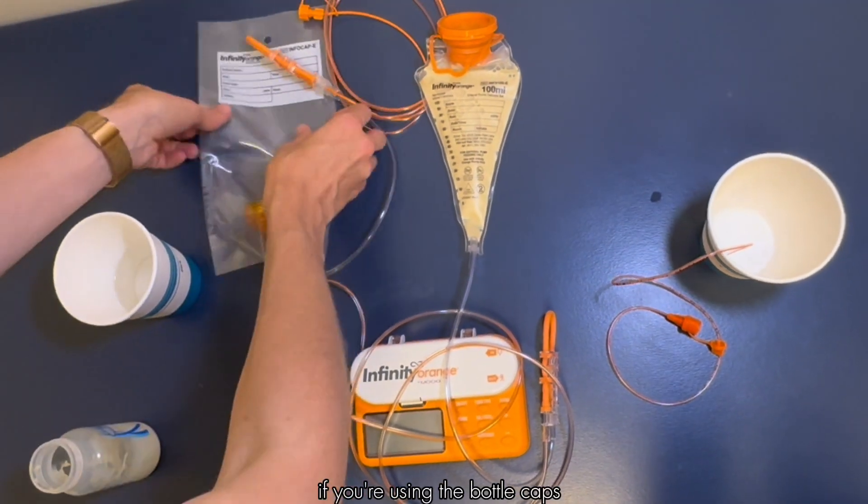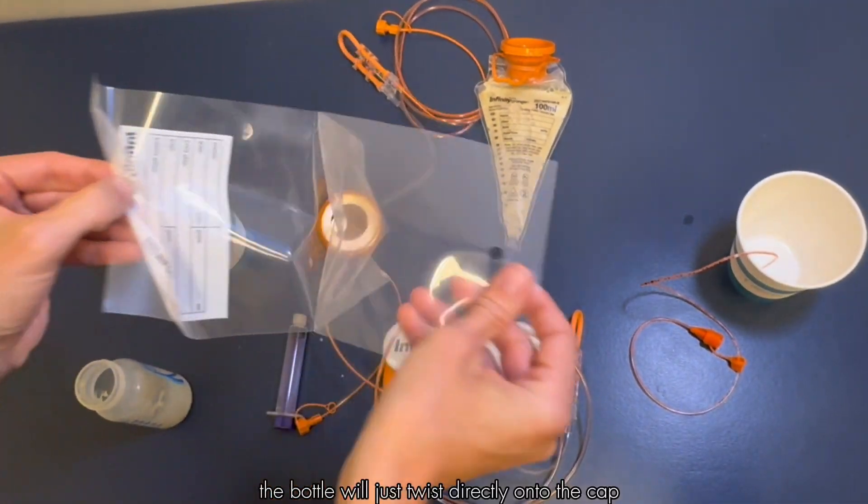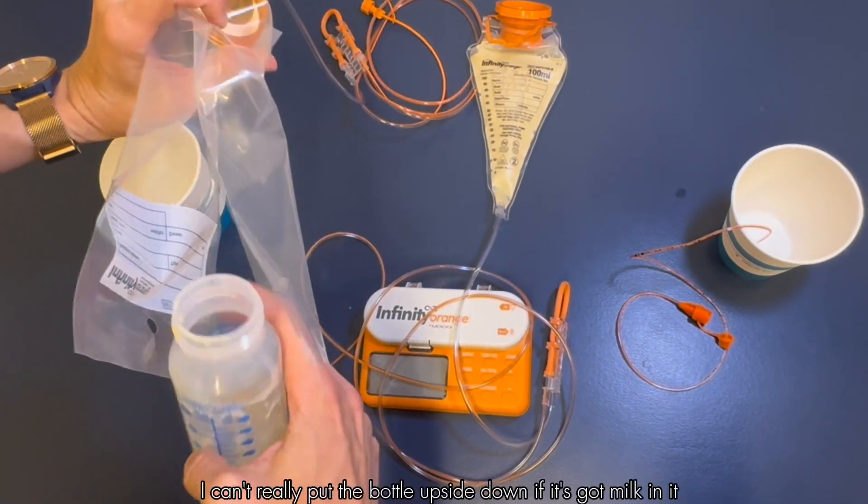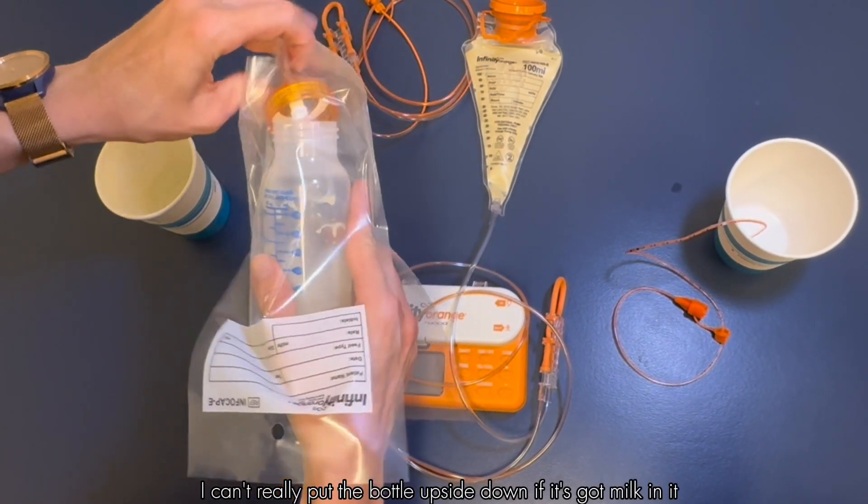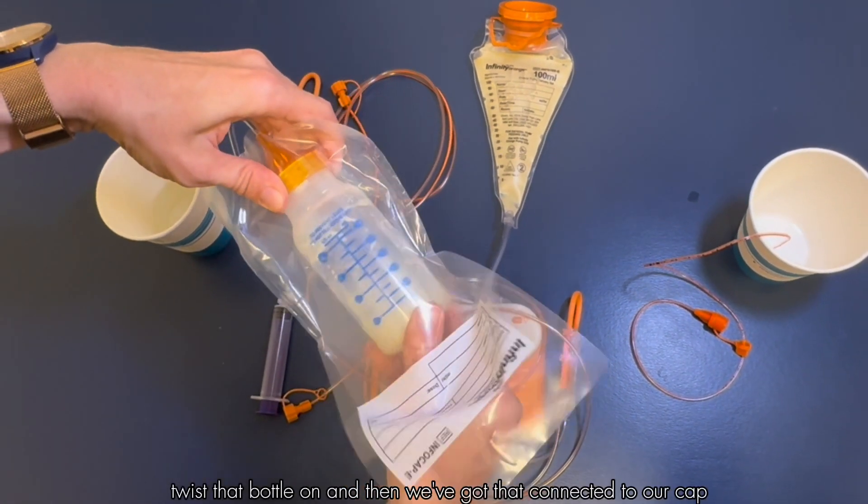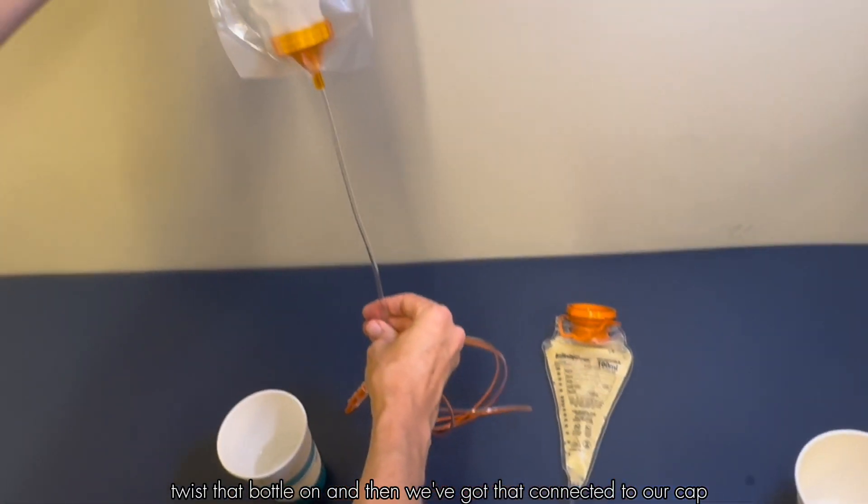If you're using the bottle caps, the bottle will just twist directly onto the cap. In that situation I can't really put the bottle upside down if it's got milk in it, so I'm going to put the cap upside down, twist that bottle on, and then we've got that connected to our cap.